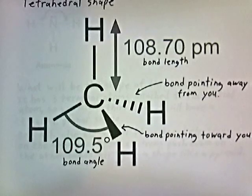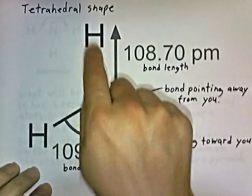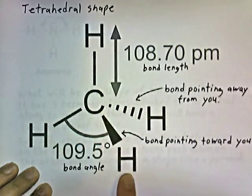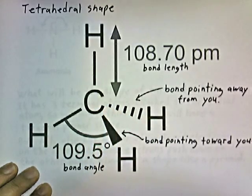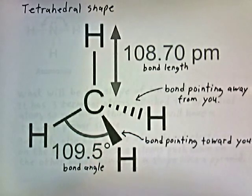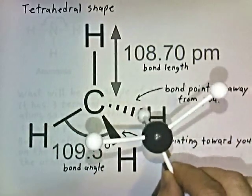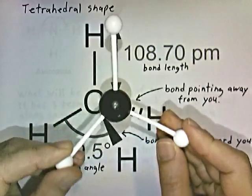That is the actual shape of methane. We have bonds going up and down and left and right, but we also have a bond coming out towards us. This long thin triangle represents a bond coming towards you, and a dashed line represents a bond going away from you. The bond angle is 109.5 degrees, which is bigger than the 90 degrees we'd get if we just drew a flat two-dimensional structure. Here is a tetrahedral shape — the bonds are not at right angles to each other.